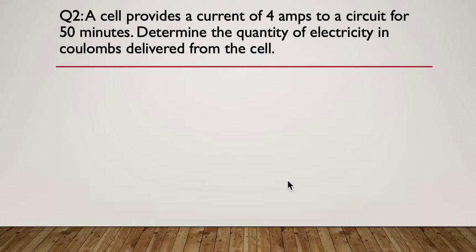Question two: a cell provides a current of 4 amps to a circuit for 50 minutes. Determine the quantity of electricity in coulombs delivered from the cell. So similar to the first question. So pause here and have a go.